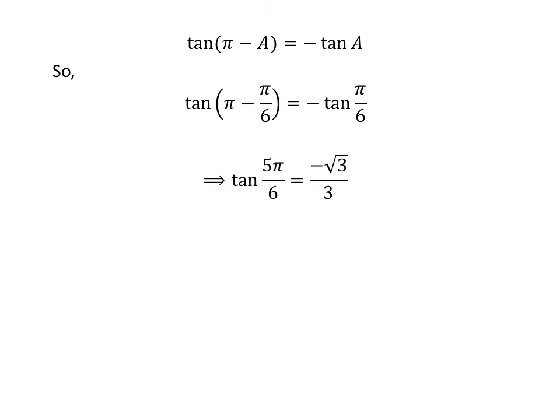As pi minus pi upon 6 is equal to 5 times pi upon 6, and plugging the value of tangent of pi upon 6 gives us tangent of 5 times pi upon 6 is equal to minus square root of 3 upon 3.